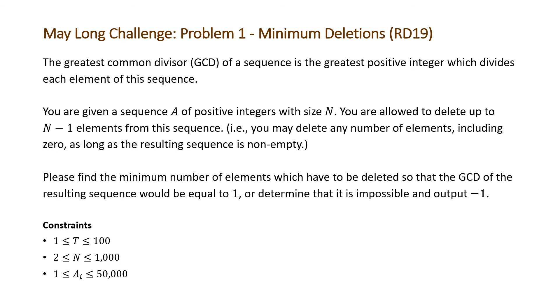The problem states the greatest common divisor of a sequence is the greatest positive integer which divides each element of this sequence. You are given a sequence A of positive integers with size N. You are allowed to delete up to N minus 1 elements of this sequence, i.e., you may delete any number of elements including zero as long as the resulting sequence is non-empty.